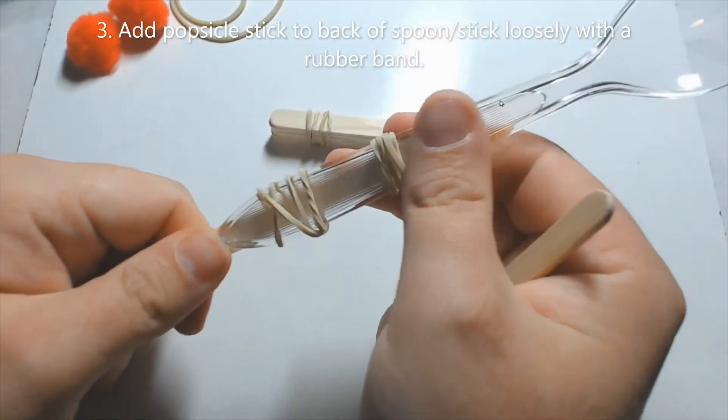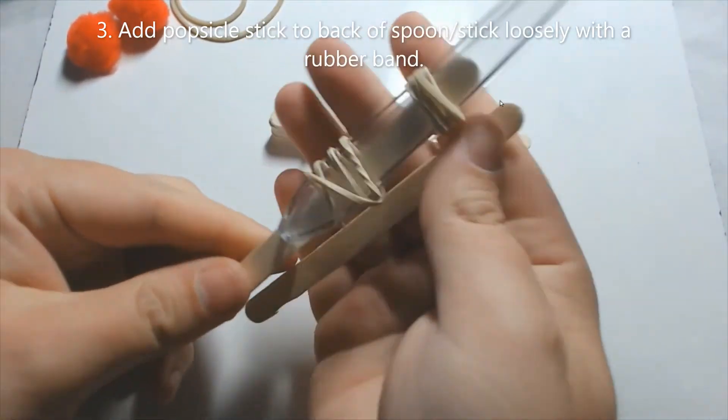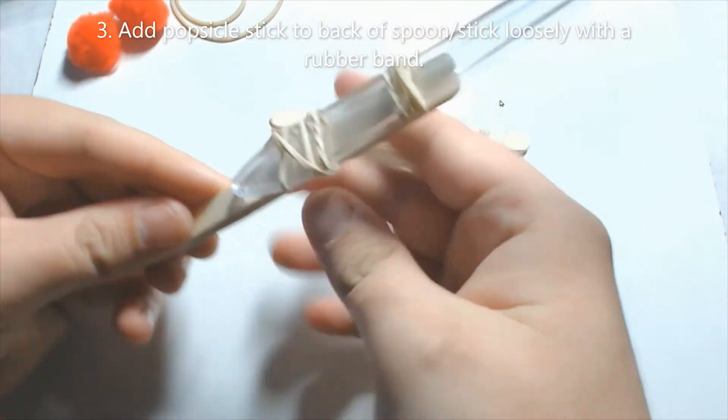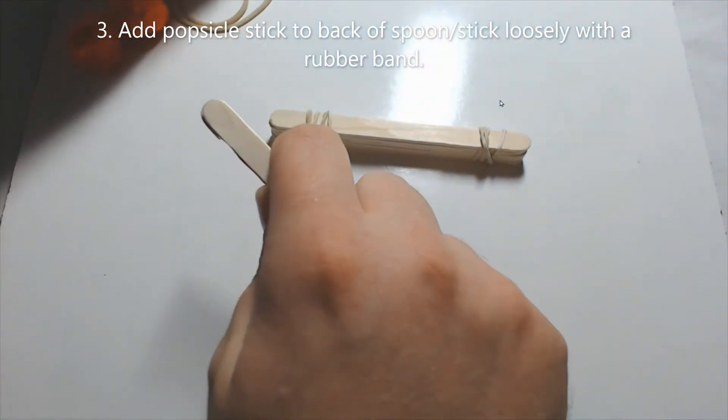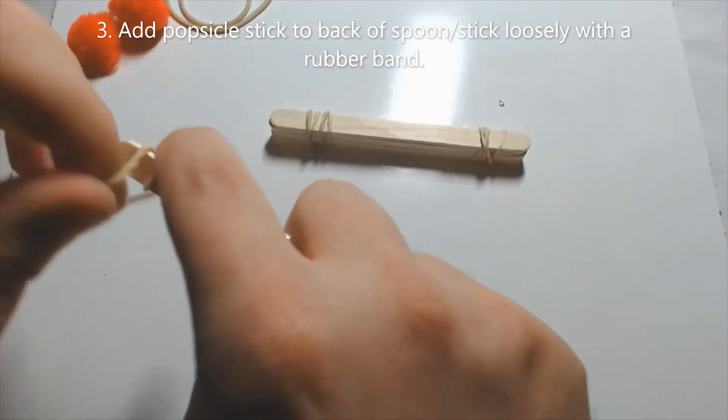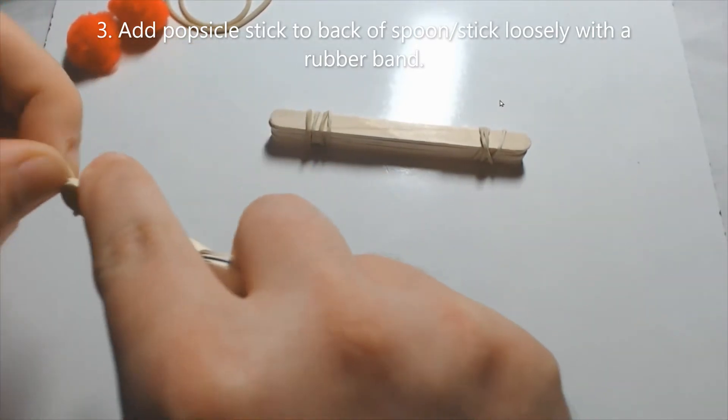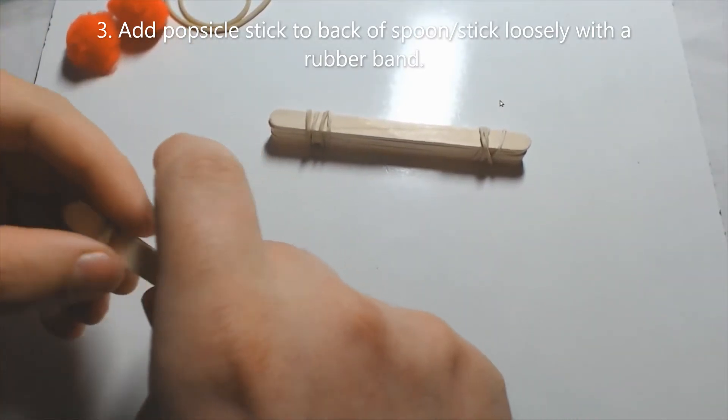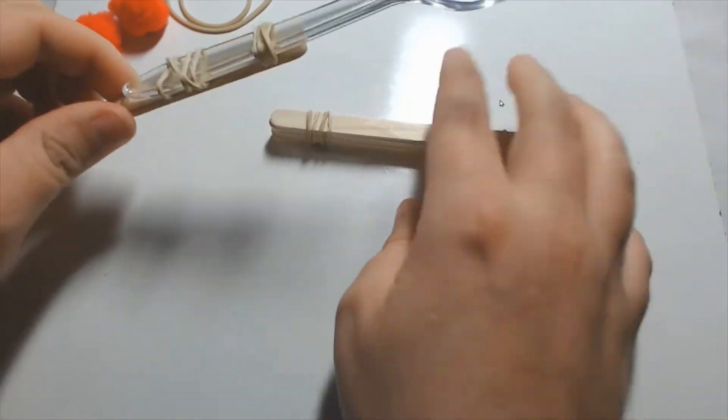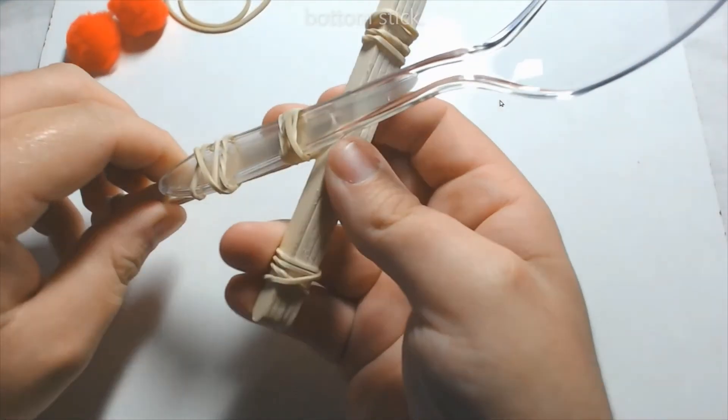All right, the next step we're going to do is you're going to add one more popsicle stick to the back of your spoon stick combo. You're going to loosely attach that piece at the bottom. And that's going to be our pivot point or what's going to help us to launch our catapult, so you want to make sure that's loose.